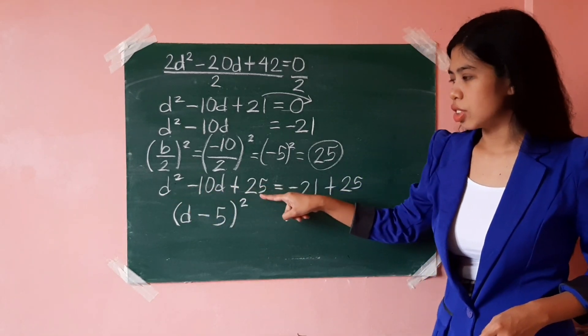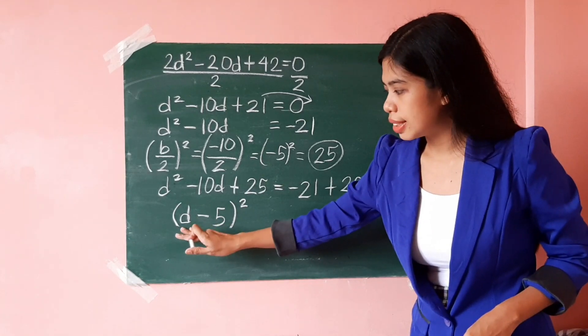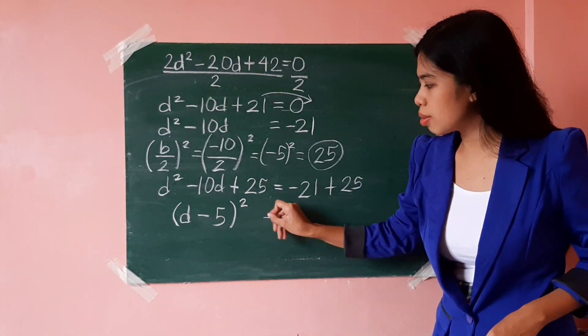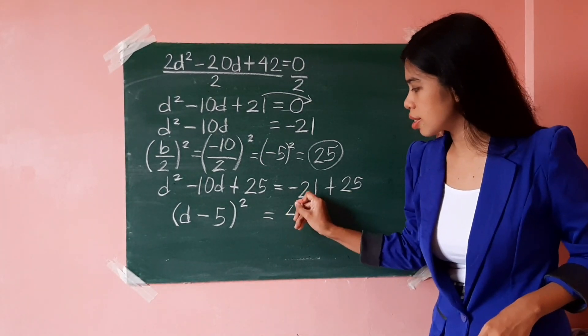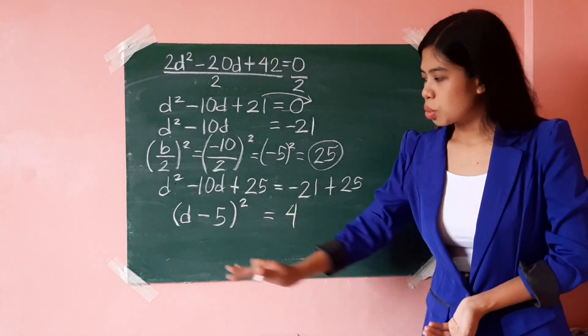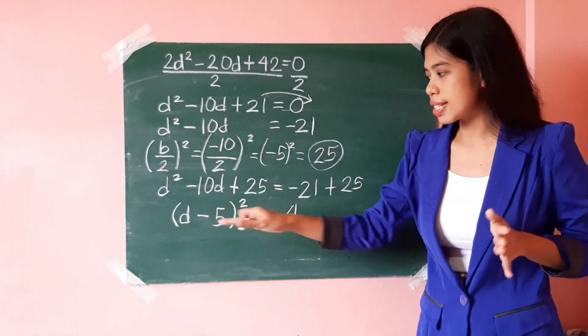This perfect square trinomial, when expressed as a square of a binomial, is quantity d minus 5 squared equals, what is negative 21 plus 25, that's positive 4. So, this is now in the form quantity x minus h squared equals k.